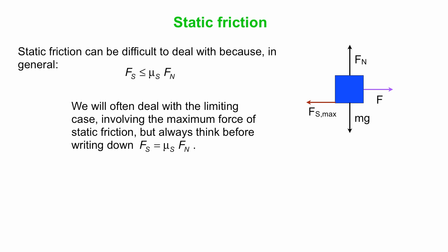We will often deal with a limiting case. If we say the maximum force you can apply to this book before it starts moving is whatever, then you know what to use for FS max. But there will be lots of cases we deal with where we just say, hey, we push on the book with some 4 or 5 Newtons. The book doesn't move. Then you have no idea whether it's the limiting force, the maximum force of static friction. So that could well be FS less than mu S times FN.